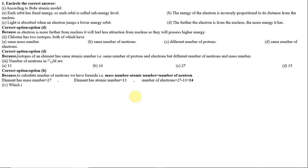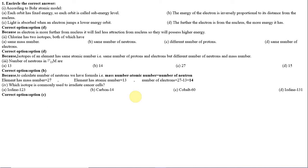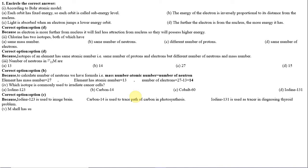Number 4: Which isotope is commonly used to irradiate cancer cells? Option A: iodine-123, Option B: carbon-14, Option C: cobalt-60, Option D: iodine-131. The correct option is C, cobalt-60. Iodine-123 is used to image the brain, carbon-14 is used to trace the path of carbon in photosynthesis, and iodine-131 is used as a tracer in diagnosing thyroid problems.